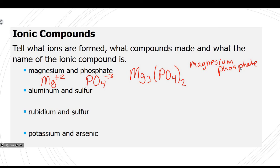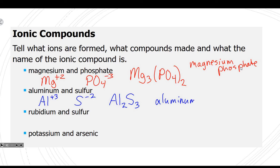For aluminum sulfide: Al has a plus 3 charge — once you pass carbon you start going positive and back down, so aluminum is plus 3. Sulfur is S with a minus 2 charge. Put them together with the correct subscripts and change the ending to -ide. Be careful — sodium is Na not N, potassium is K not P. Rubidium sulfide is Rb2S.